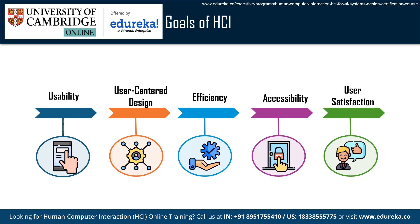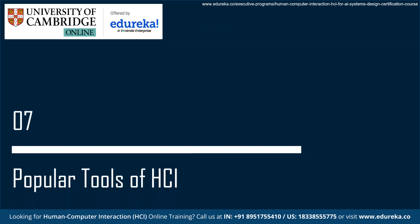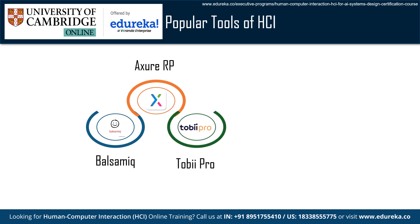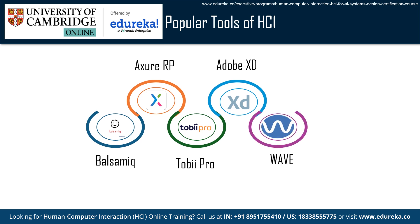Popular tools of HCI include: Balsamiq, a wireframe tool for low-fidelity sketches and prototypes; Axure RP, which permits the development of user interactions and dynamic content in interactive prototypes; Tobii Pro, which offers eye-tracking hardware and software for understanding visual attention in user interfaces; Adobe XD, which enables teamwork, design, and prototyping on a single platform; and WAVE (Web Accessibility Evaluation Tool), a suite of tools to help authors make their web content more accessible. These tools are frequently used for design, usability testing, and prototyping.